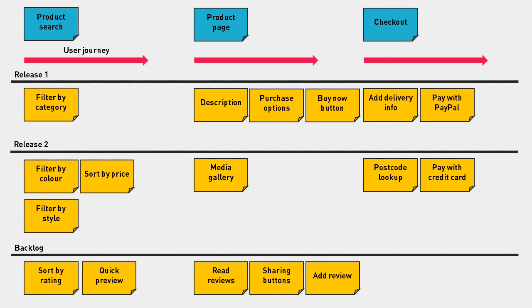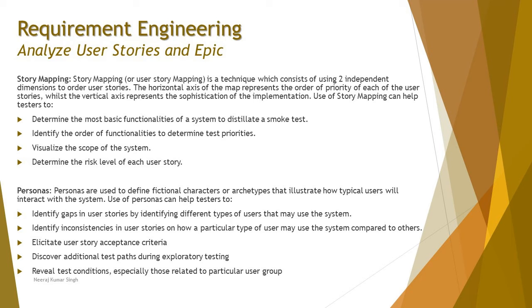The benefits of story mapping include helping testers determine the most basic functionality of a system to distill a smoke test, identify the order of functionalities to determine test priorities, and visualize the scope of the system. In the example shown, we have product search, product page, and checkout filtered by prioritization into release one, release two, and the backlog. This can also be displayed on an X-Y axis where X is time and Y is priority.